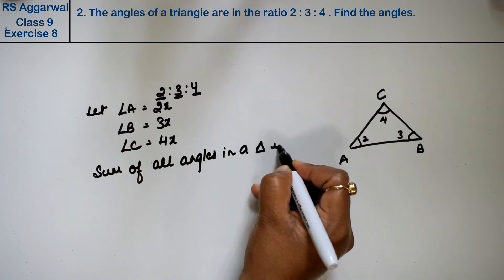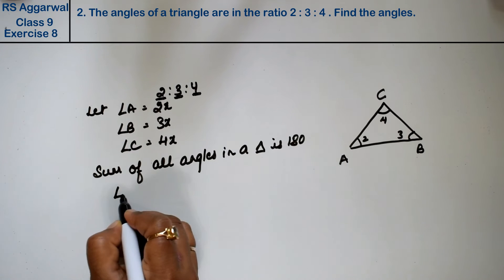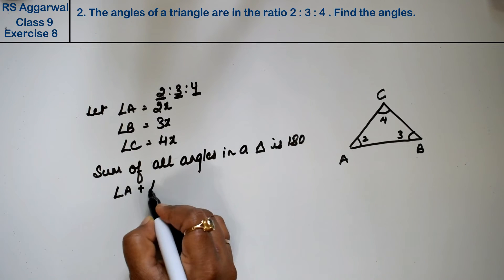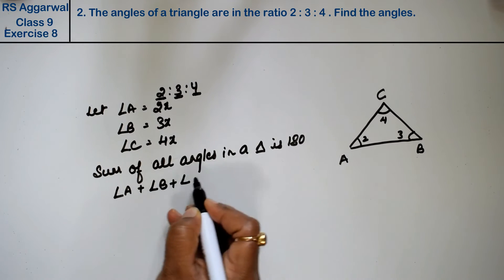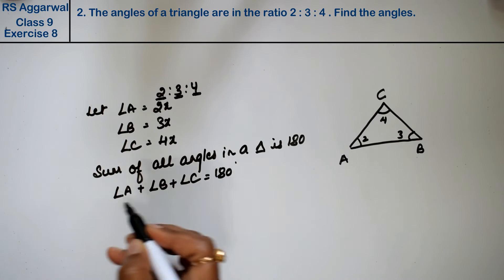The sum of angles in a triangle is 180 degrees. So angle A + angle B + angle C = 180.